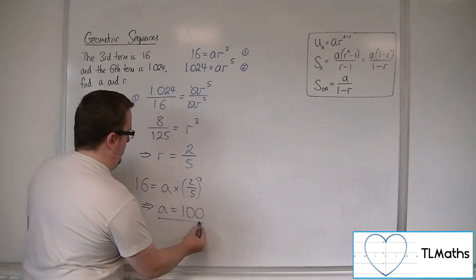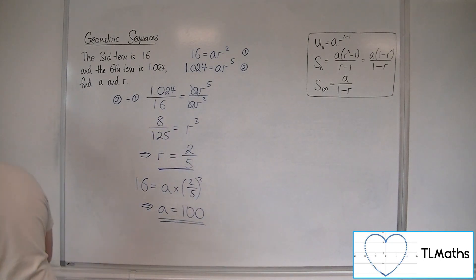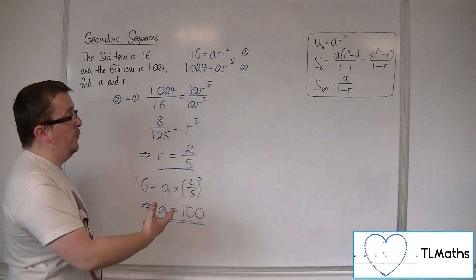So the first term was 100. The common ratio was 2 fifths. And that's how we can solve simultaneous equations of that form.